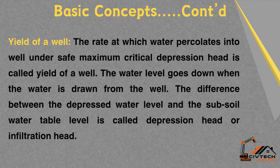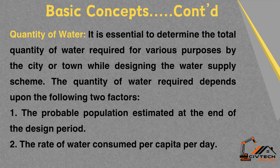Yield of a Well: The rate at which water percolates into a well under safe maximum critical depression head is called the yield of a well. The water level goes down when water is drawn from the well. The difference between the depressed water level and the subsoil water table level is called the depression head or infiltration head. It is essential to determine the total quantity of water required for various purposes by the city or town while designing the water supply scheme.